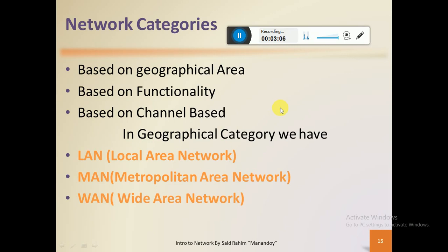We also talked in the last class about the purposes of using the Internet. The Internet is a type of network — you can say a broad network is the Internet. Some people use the Internet for study purposes, some for entertainment, some for business, and some for research. There are various purposes for which people use the Internet, and this shows the importance of networking.